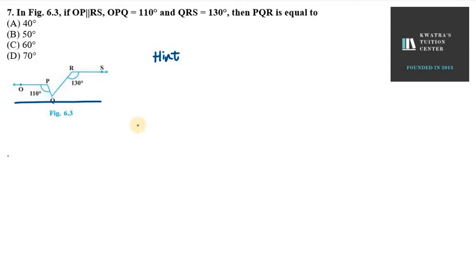So this is my point Q. I will draw a straight line through point Q. So this is your point Q. Now what we have to find is PQR value.